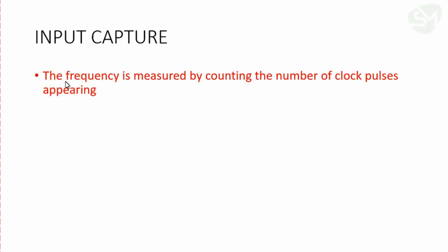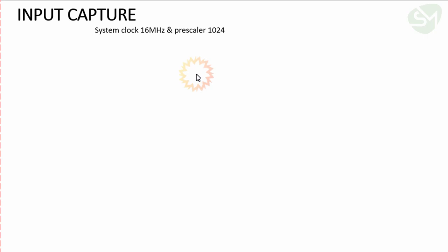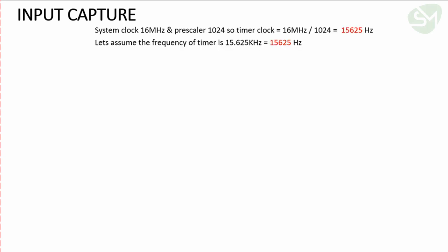The frequency is measured by counting the number of clock pulses appearing. Assume that the system clock is 16 megahertz and the pre-scaler is 1024, and the timer clock is given by 16 megahertz divided by 1024, that is 15625 hertz.